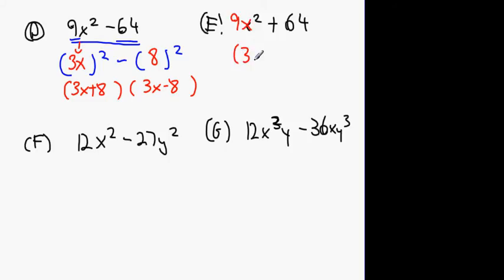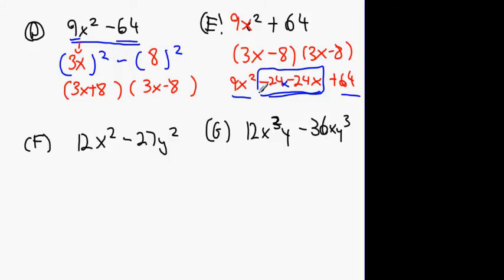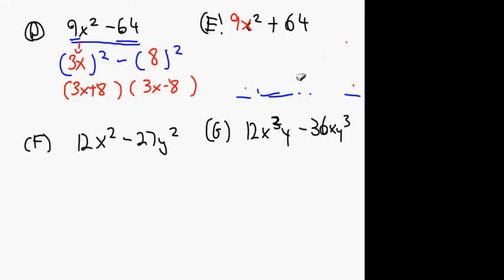So you said 3x minus 8, and then what's the other one? 3x minus 8. Now if you multiply that out, James, what you're going to end up getting is this: you're going to get 9x squared, you're going to get minus 24x minus 24x plus 64. You're right about, you get 9x squared and 64, but you get this extra. See the part in the middle? And that's why it doesn't work. Is that alright? Yes. It's the plus and the minus that destroys the middle, or gets rid of the middle.